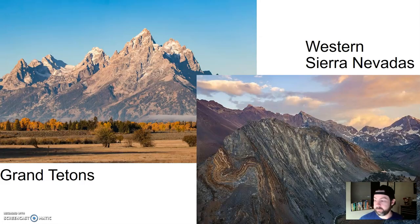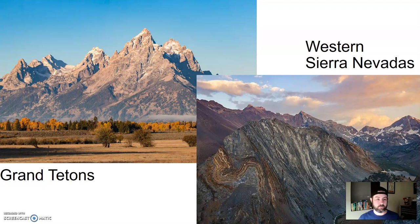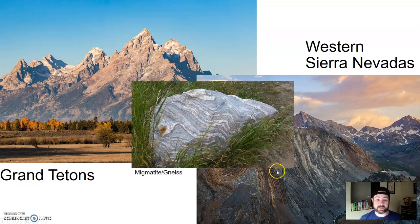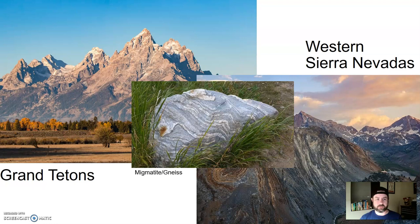That's not the only way we make mountains, but this is one way that we can make metamorphic rocks based on regional metamorphism. Oftentimes, it's very high-grade because there's a lot of pressure and a lot of heat. Here we see the Grand Tetons, and here we see the western Sierra Nevadas. In both, we can find migmatite or gneiss — these are the highest grades of metamorphism that we find before things start to melt.